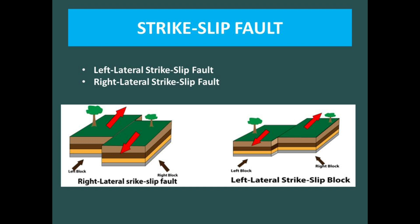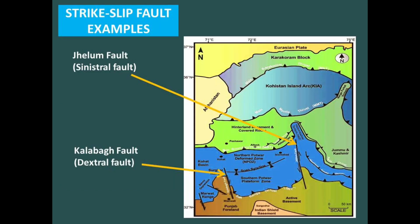To tell the difference between left and right lateral: suppose we stand on one block of the fault and we see the other block move to the right side relative to us, then the fault is called a right lateral fault. If the block moves to the left side, then it is called a left lateral strike-slip fault.